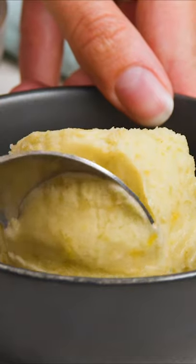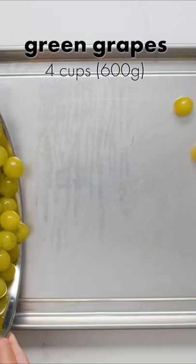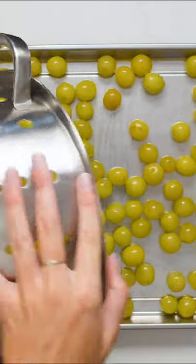This grape sorbet is creamy like ice cream and only uses 3 ingredients. First pour about 4 cups of washed green grapes onto a baking sheet that will fit in your freezer.